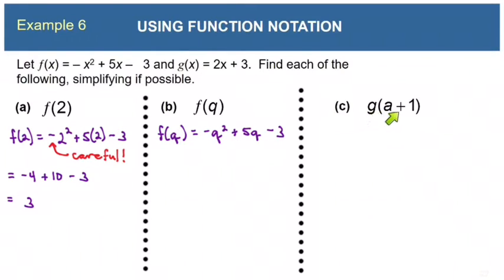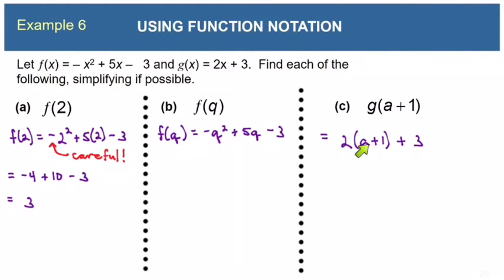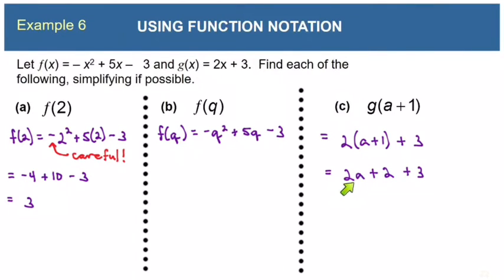The next one says g of a plus 1. This means we take the g function, which is 2x plus 3, and replace every x with a plus 1. So instead of 2x plus 3, it becomes 2 times (a plus 1) plus 3. We distribute the 2 and then add the 3: 2a plus 2 plus 3 becomes 2a plus 5.